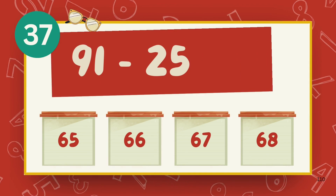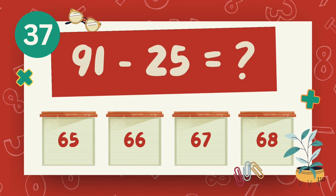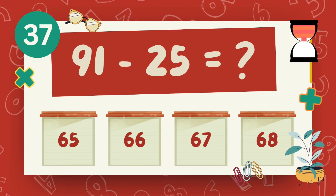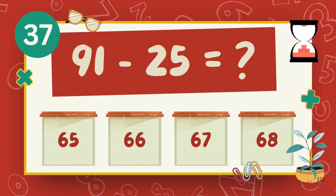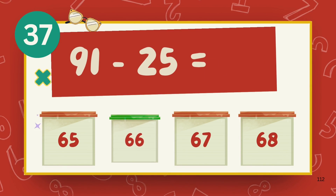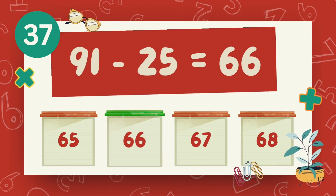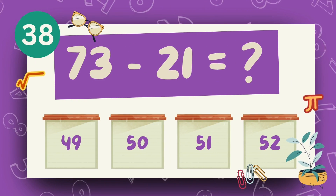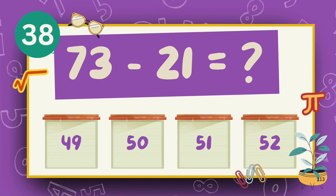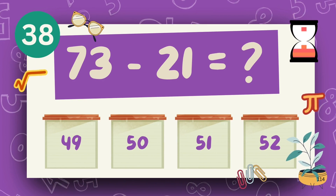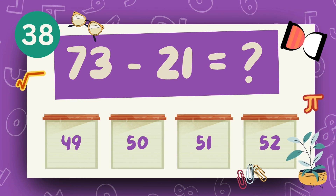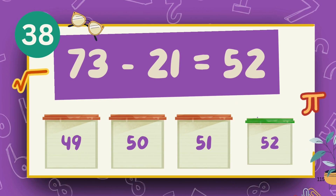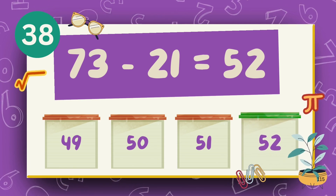What is 91 minus 25? The answer is 66. What is 73 minus 21? The answer is 52.